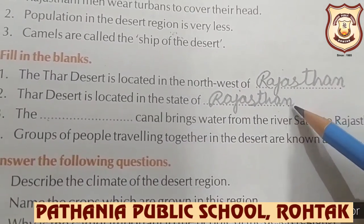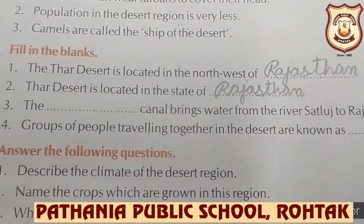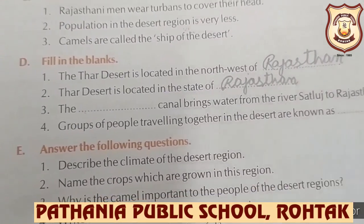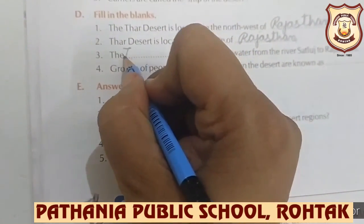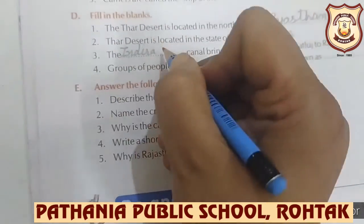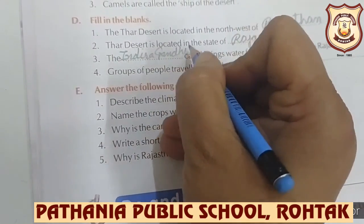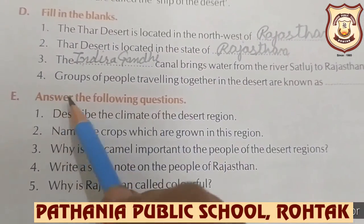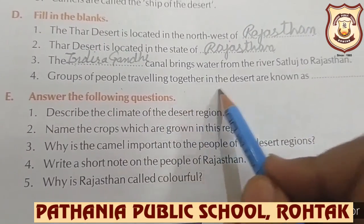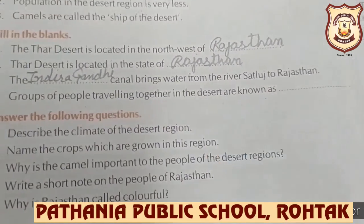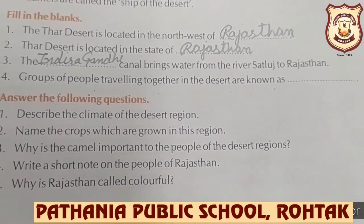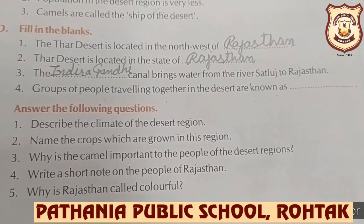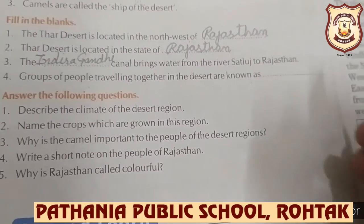Next: the dash canal brings water from the river Sutlej to Rajasthan — that is the Indira Gandhi Canal, so write 'Indira Gandhi' here. Next: a group of people travelling together in the desert are known as Banjaras, or nomads. Write 'Banjaras' here.